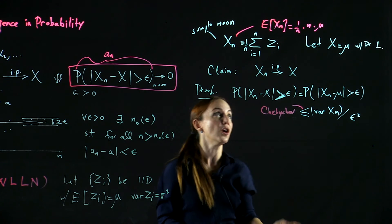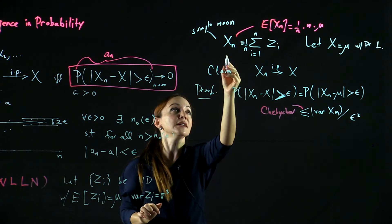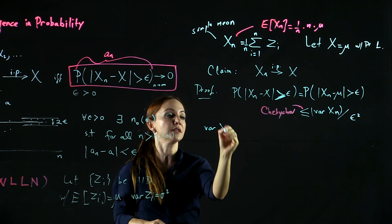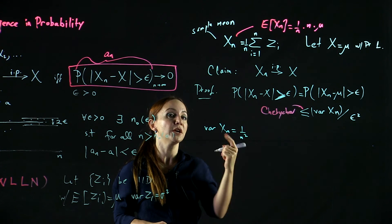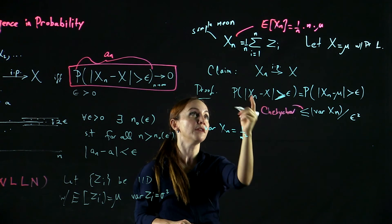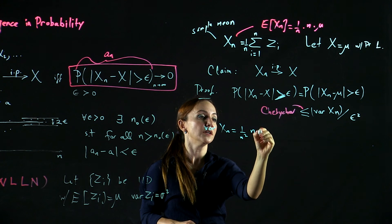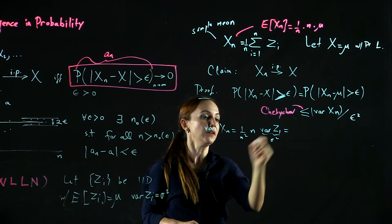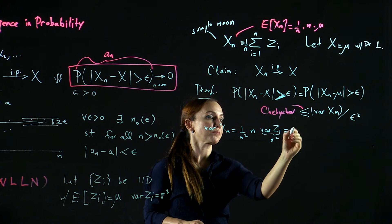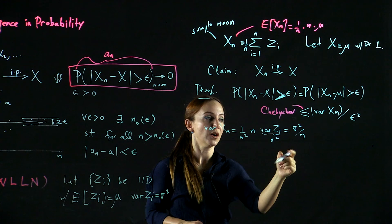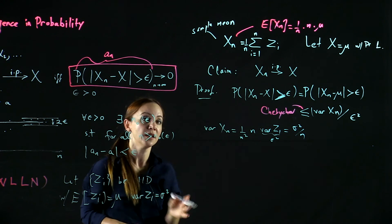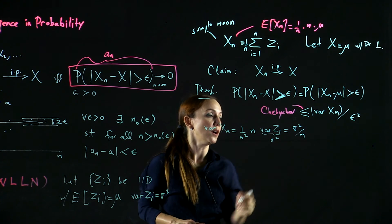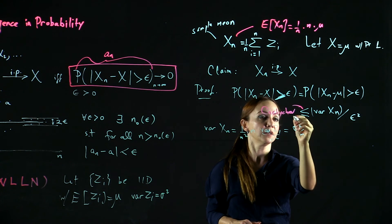But what is the variance of XN? Well, XN is 1 over N times the sum of Zi. So the variance of XN is 1 over N squared. Because of the independence of the Zi's, the variance of the sum is N times variance of Z1, which is sigma squared. So this is sigma squared over N. The variance of XN is decaying to 0 like sigma squared over N.